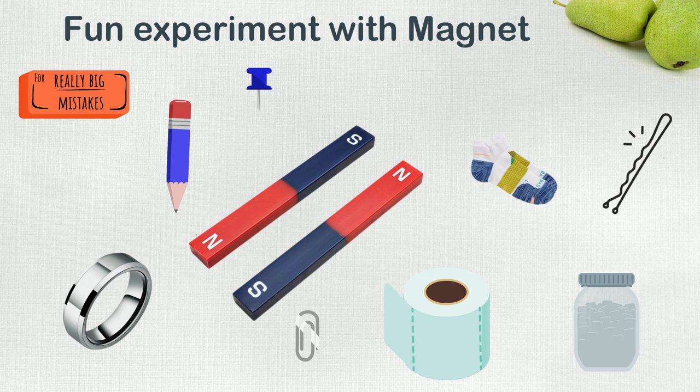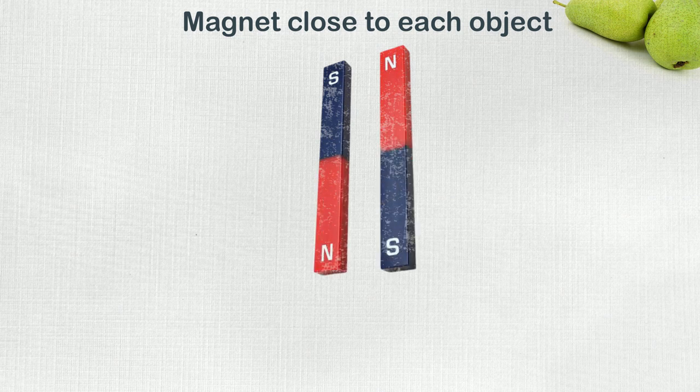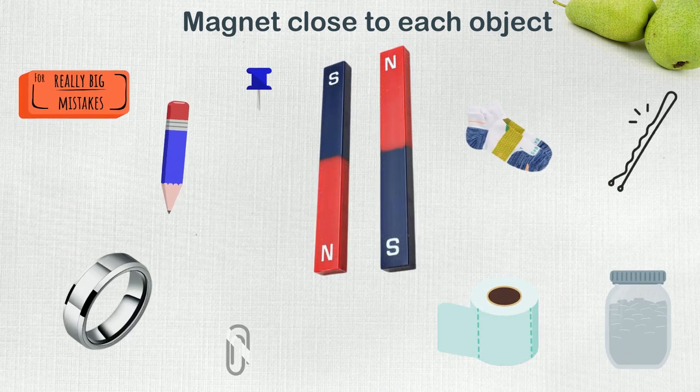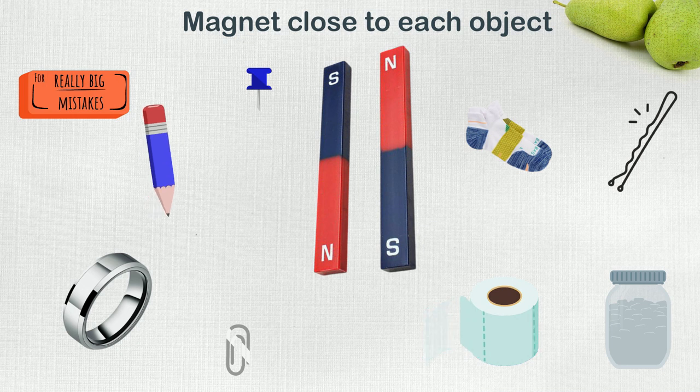Out of these objects, which one do you think would be attracted to magnet? Let's find out. Let's bring the magnet close to each object one by one and note which ones are pulled towards it and which ones are not.